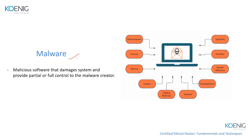Malware is malicious code that may damage your system or provide partial to full control to the creator. Types include: spyware (records credentials, credit card, and financial details), botnet malware (networks of compromised systems), adware (malware embedded within ads), Trojans (disguised as genuine software), viruses and worms (spread very quickly), and ransomware (locks you out of your own files and demands payment, keeping files encrypted until a ransom is paid).